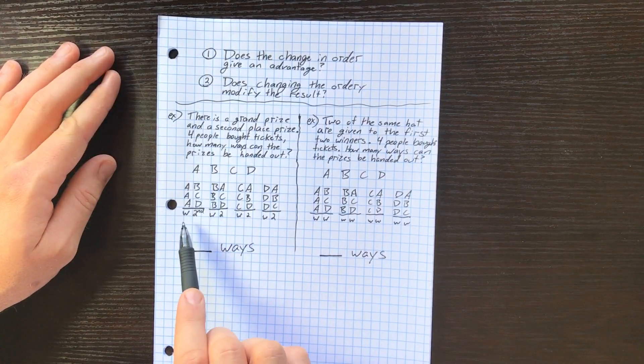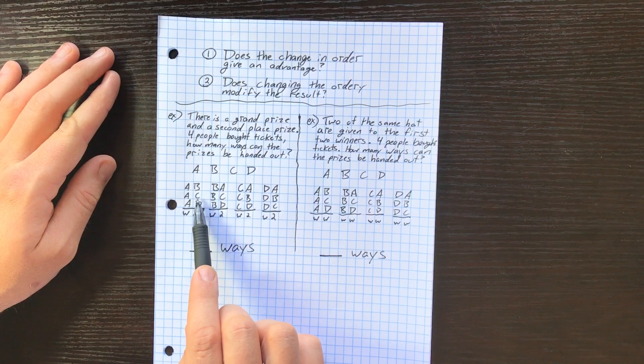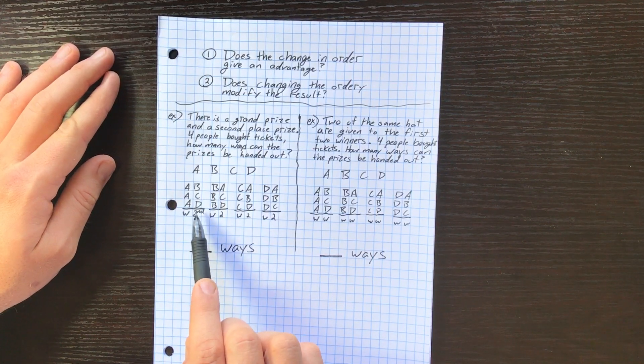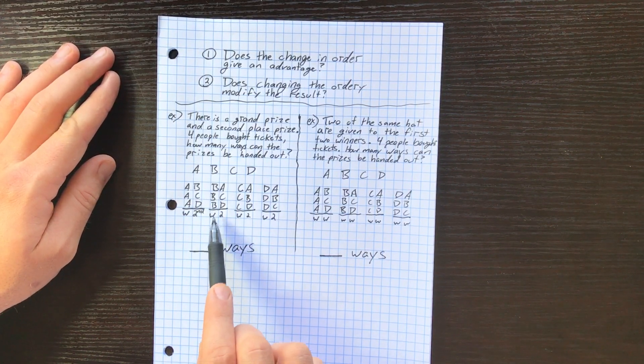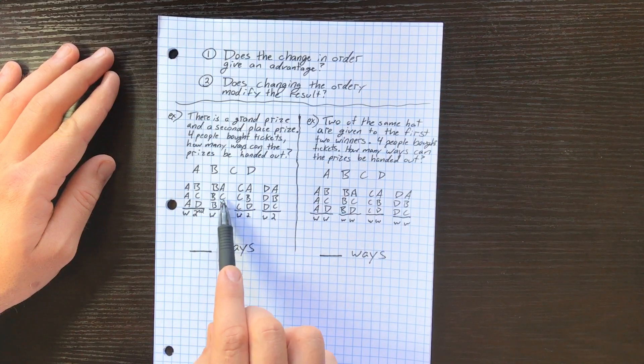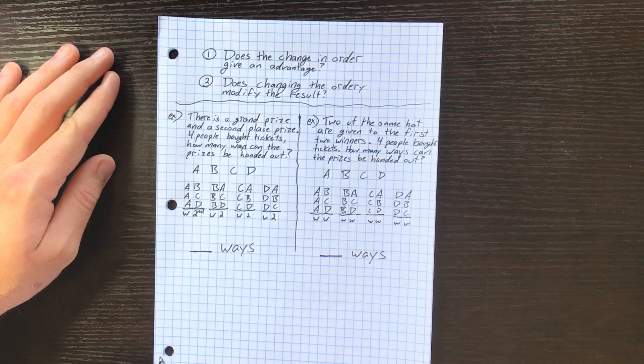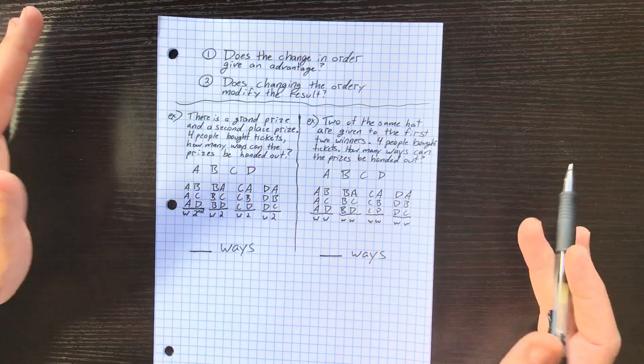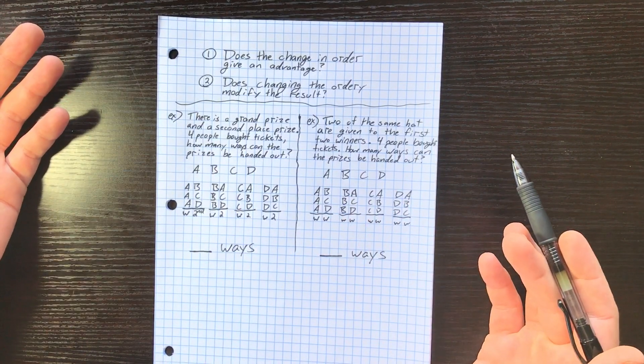So if A wins the grand prize, then B could win second, C could win second, or D could win second. Same thing over here: if the winner is B, then we could have A, C, or D as a second place finisher.